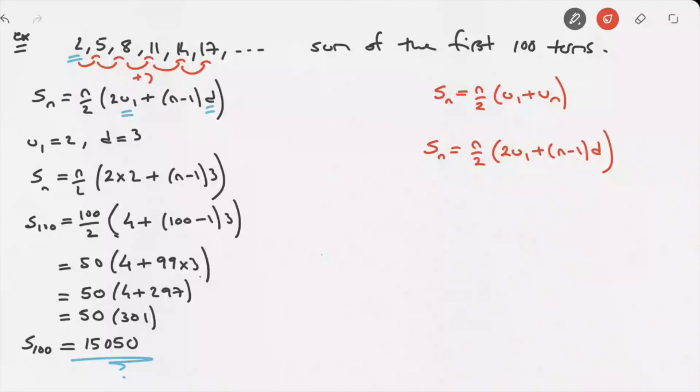And we use the first formula when we know the formula of the arithmetic sequence. And we'll use the second formula when we don't, or when it's not given to us.